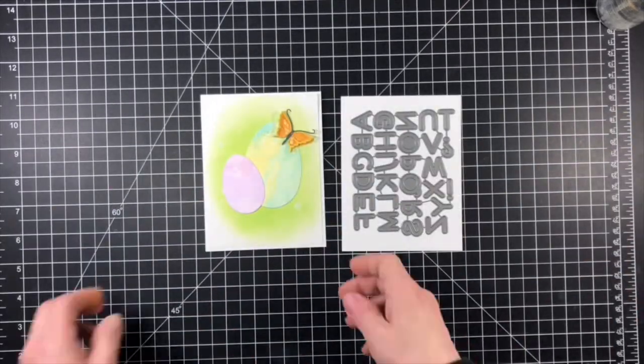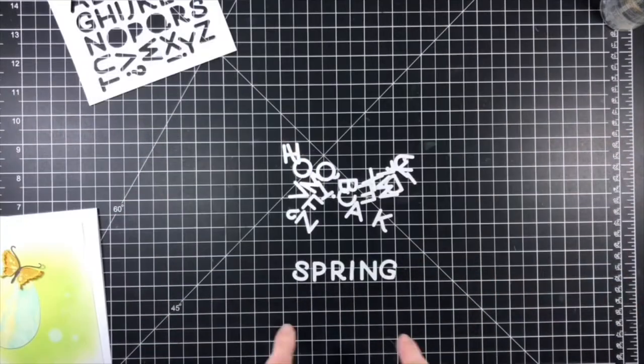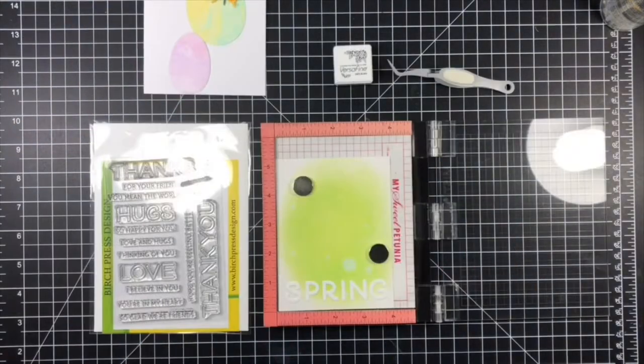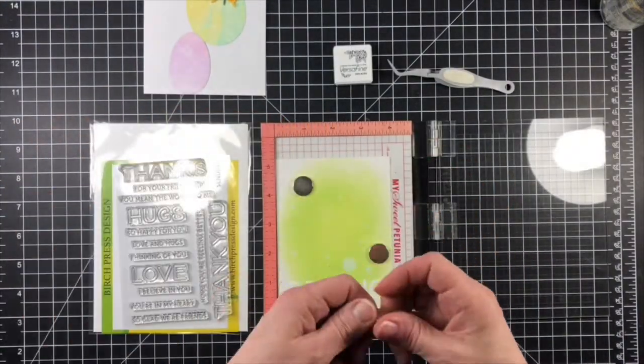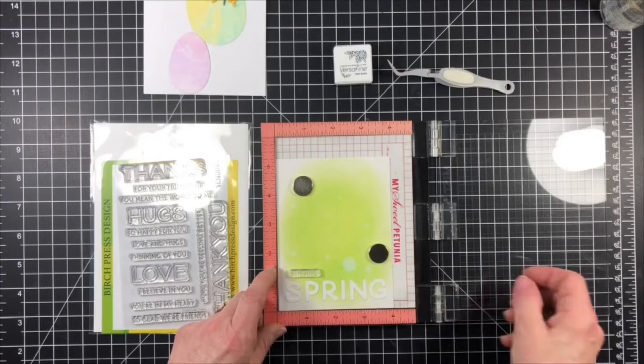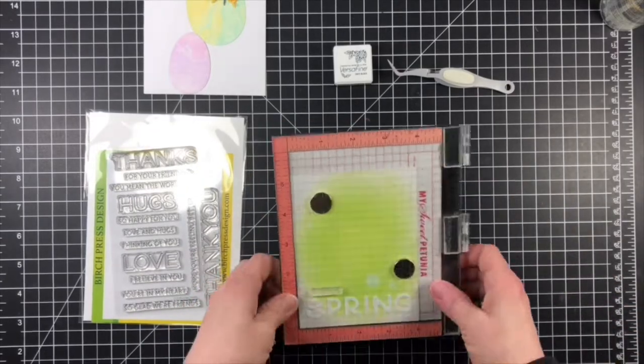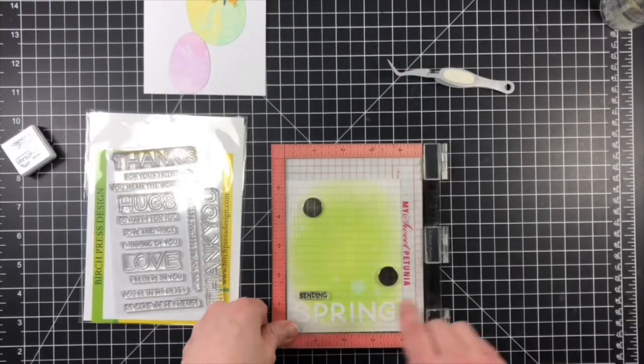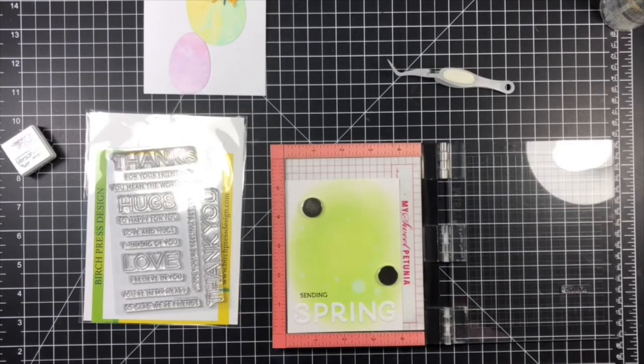Next I arranged all my die cut pieces onto the grassy panel I created in the beginning and I cut the entire Lingo alphabet die with white cardstock and only took the letters that I needed to spell the word spring. The rest I put into a small plastic bag to use another time.